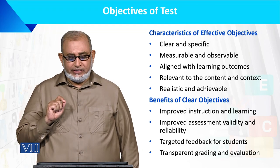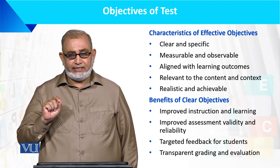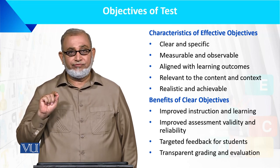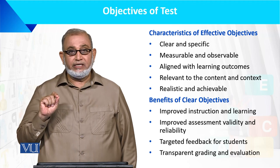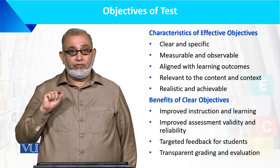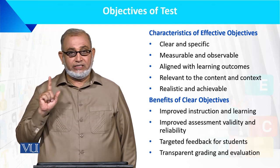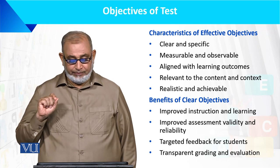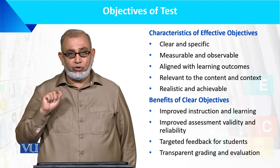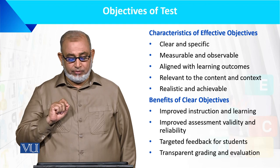Now, the characteristics of effective objectives. There are normally 5 characteristics, summarized by the word SMART: Specific and clear; Measurable and observable; Aligned with learning outcomes — having a connection with learning outcomes; Relevant to the content and context; and Realistic and achievable.